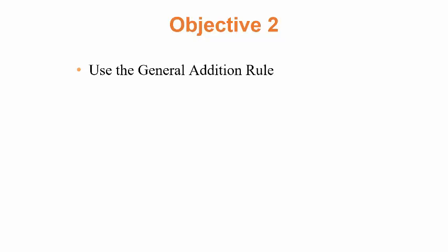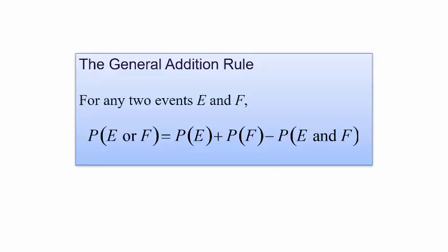But what if the events are not disjoint, meaning they have a common outcome? We use the general addition rule. For any two events E and F, the probability of E or F occurring equals P(E) + P(F) minus P(E and F). You subtract the probability that E and F both happen to prevent double counting.